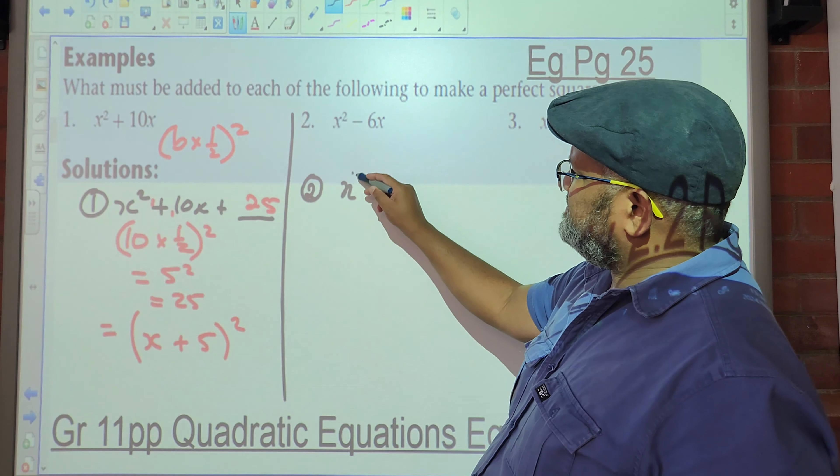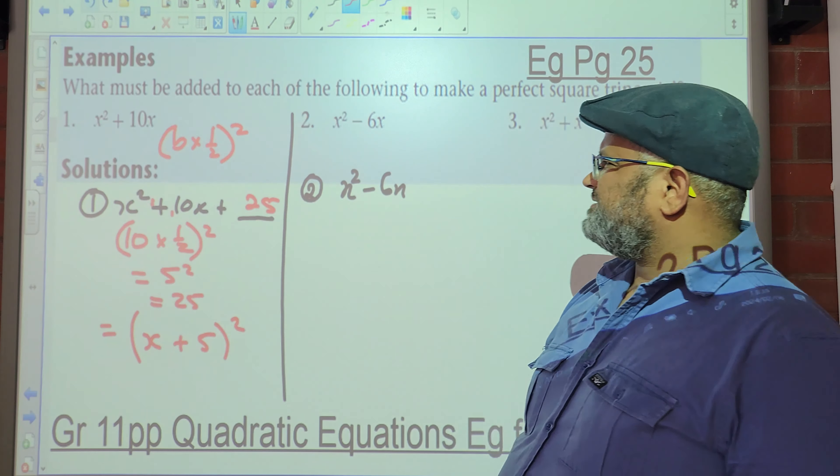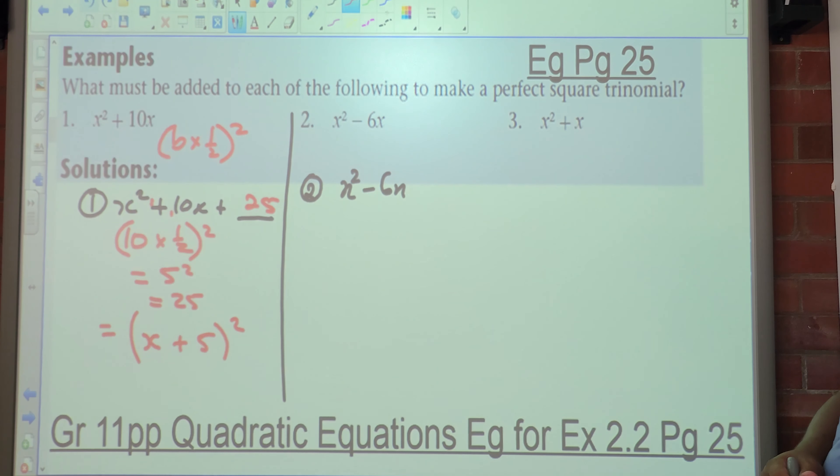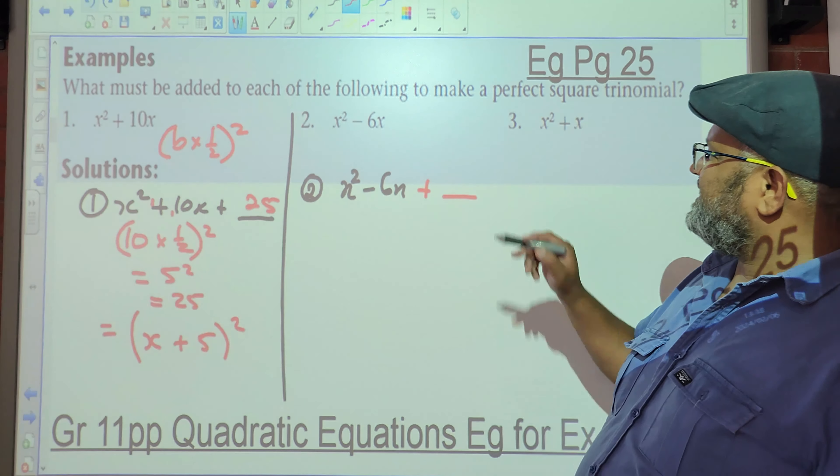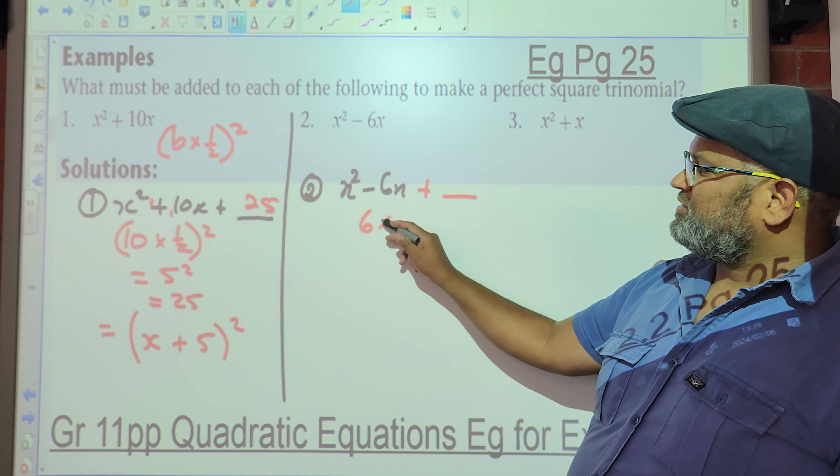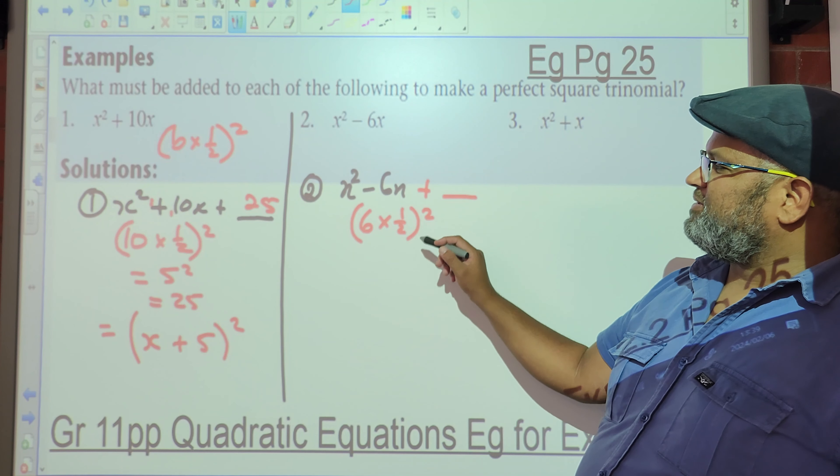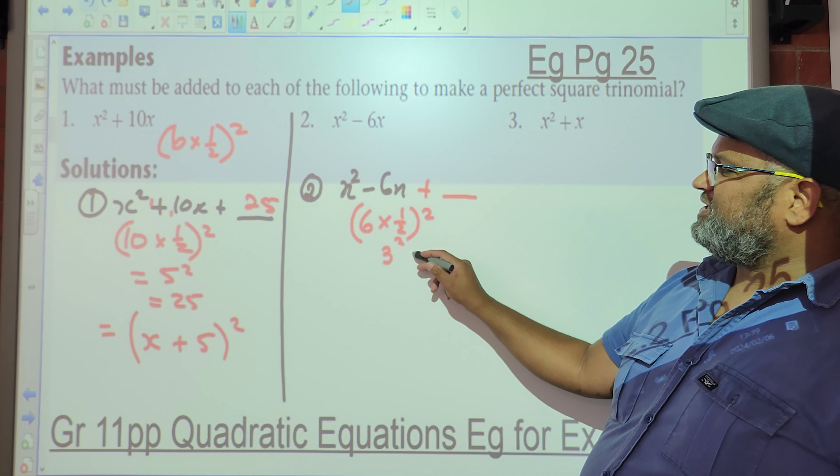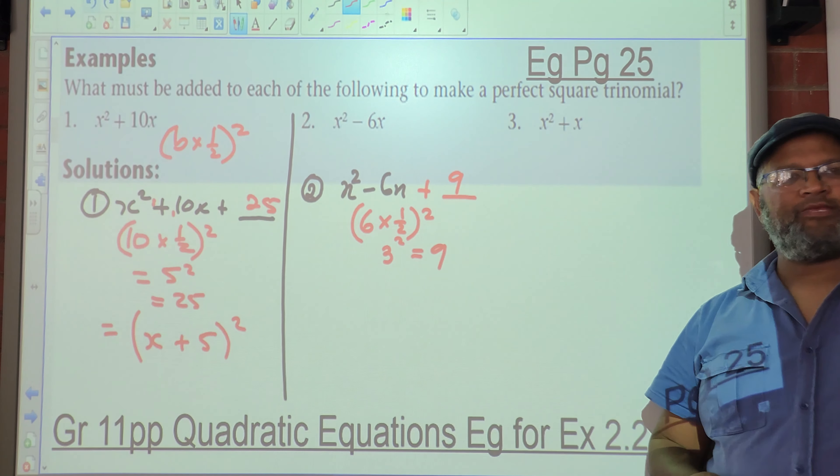Okay, let's look at number two. So you've got x² - 6x. Again, what must be added to the following to make a perfect square trinomial? So here we go. What must be added here? So there's six multiplied by half squared. What's six multiplied by half? Three squared. Three squared is nine.